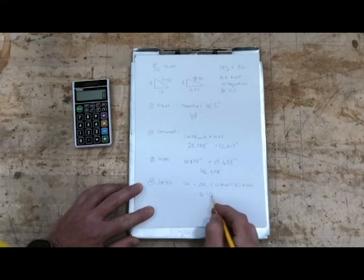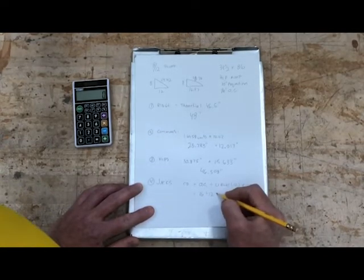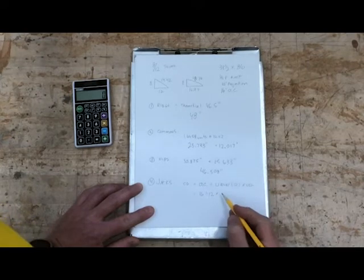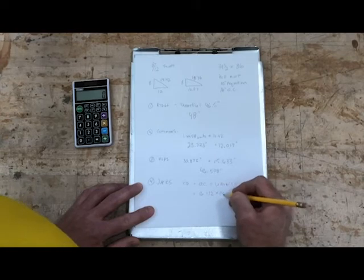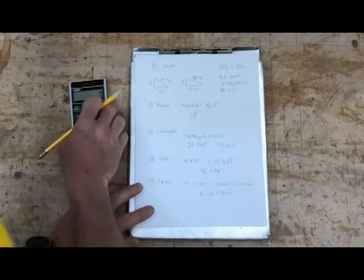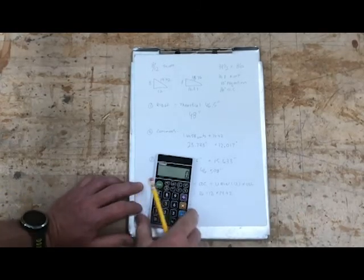That tells us how many units of run we have there. I know the answer to that is 1.333. So that's always what it is for 16 on center. And our unit line length in this case is 14.42. Now you'd be best to keep all of those decimals in there.